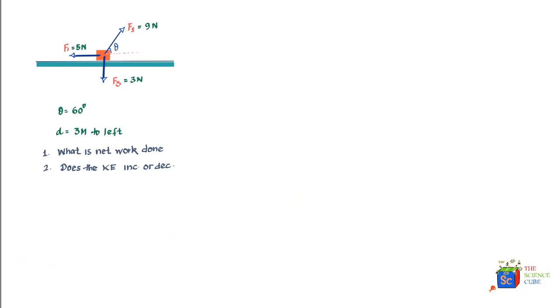In this problem we have a box on which three forces are acting, and as a result of these three forces the magnitude of which is given, the box moves to the left by three meters. The question is what is the net work done on the box and does the kinetic energy increase or decrease due to these forces and the displacement.